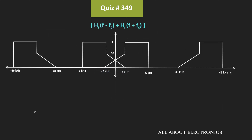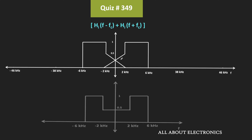Once this combined spectrum is passed through the low pass filter, the higher frequency terms will get eliminated. In the frequency response, from minus 2 kHz to plus 2 kHz, we have a linear slope. When these two slopes get added, we will get a flat region. That means from minus 2 kHz to plus 2 kHz, we will get a flat region of 0.5, and from 2 kHz to 6 kHz, we will have a flat response.